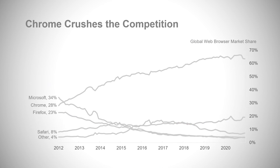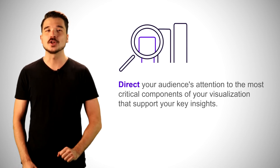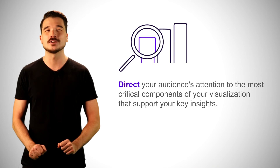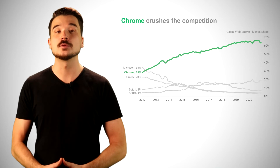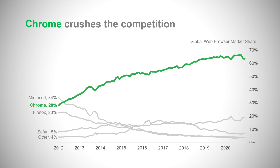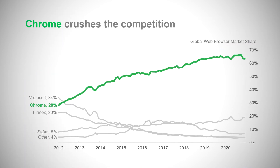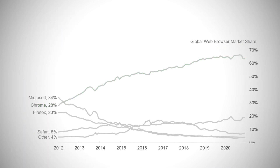Our chart is now a lot less busy, and we're ready for our final step: direct. We need to direct our audience's attention to the components of our visualization that support our key insights. In this case, we're highlighting the Google Chrome series in bright green. This strategic use of color enables our audience to immediately identify the data that supports our title and key takeaway. Once we have a clutter-free, all-gray chart like this, we now have an ideal blank canvas for storytelling.